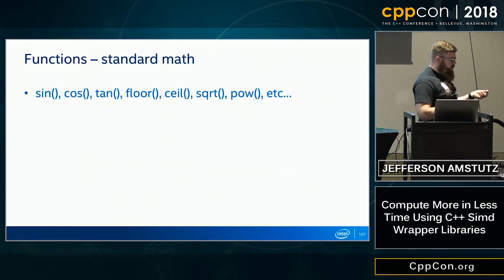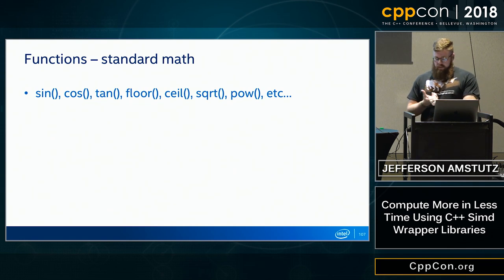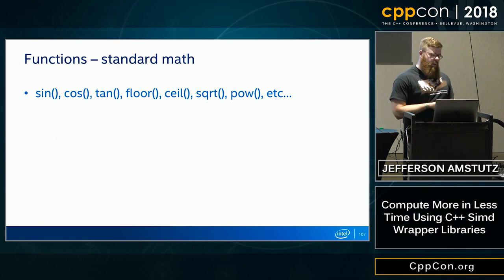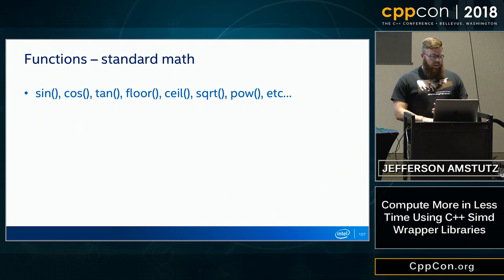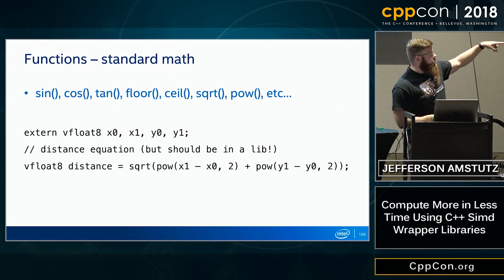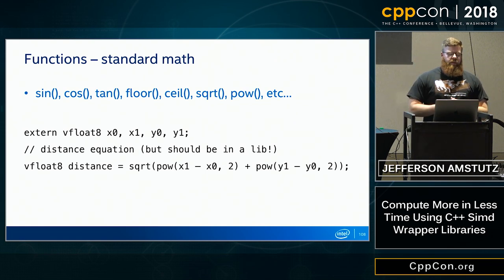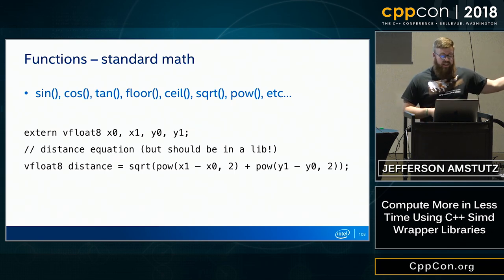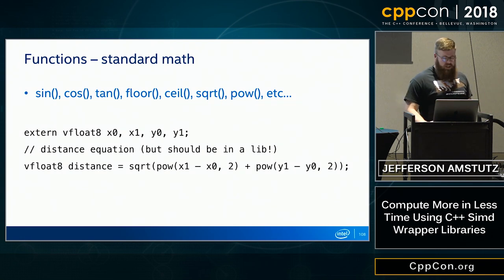SIMD wrapper libraries also provide additional math functions accelerated for SIMD types, just like C standard math functions but for packed types. For example, a distance equation using sqrt, multiplication, and addition looks exactly the same syntax-wise whether using plain floats or SIMD types. That's the whole point — to make expressions look like normal scalar compute.